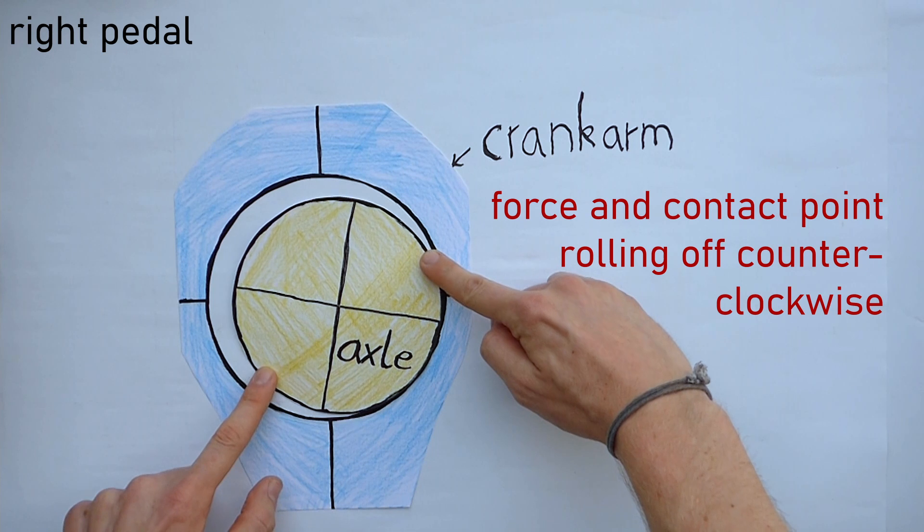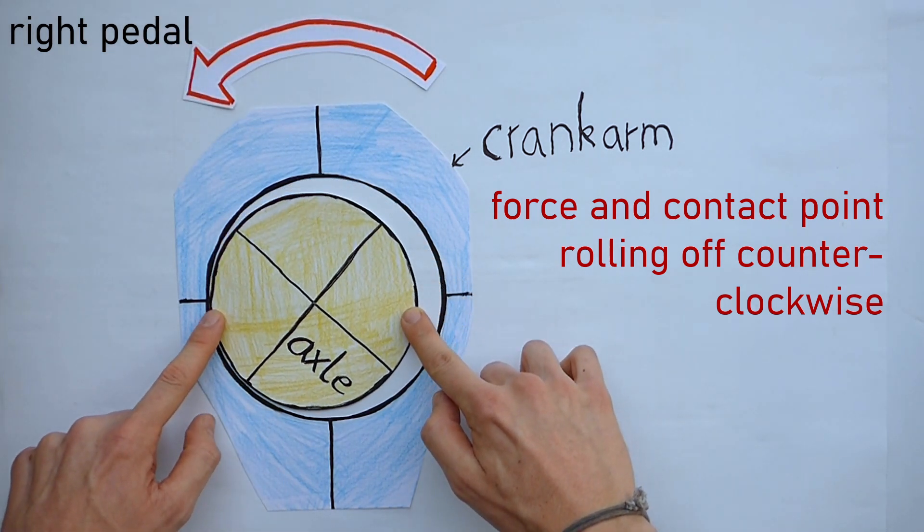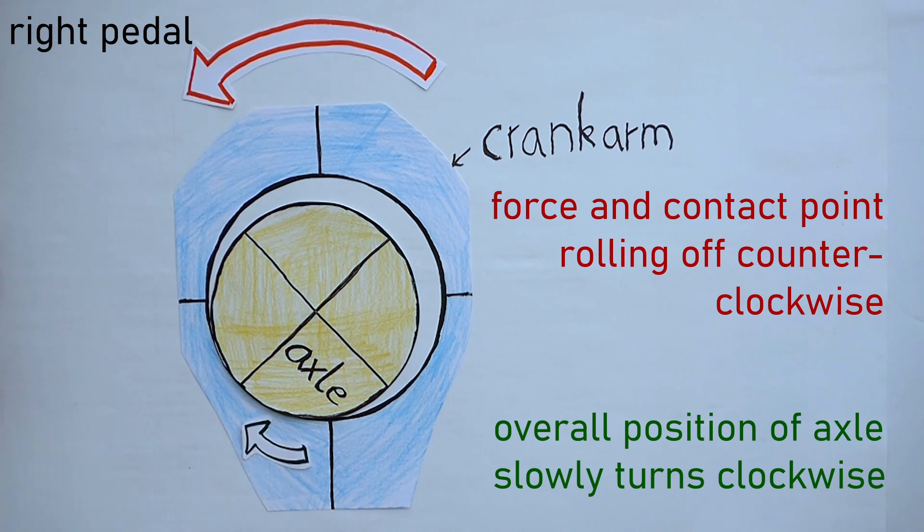The counterclockwise rotating pedaling force will cause the axle to slowly creep clockwise in the outer cylinder. The right threads will get tighter under this clockwise creep.